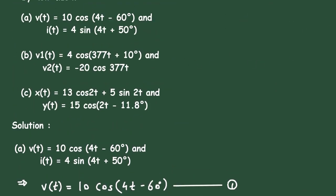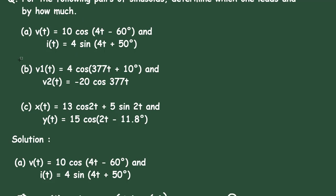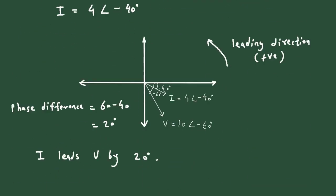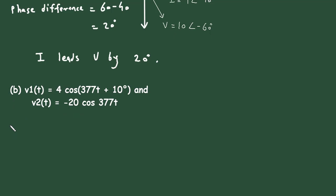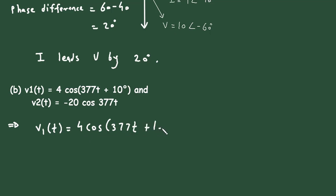Now we solve Problem B. V1(t) is given as 4 cos(377t + 10°), which is already in standard form. This is equation 1.